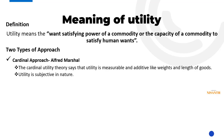Utility is subjective in nature — that is the first important characteristic of utility. Being subjective means it will change from person to person, meaning different individuals have different levels of satisfaction from the same product.